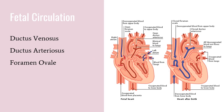Fetal circulation describes the blood flow from the placenta to and through the fetus and then back to the placenta. There are three shunts during fetal life. The ductus venosus connects the umbilical vein to the inferior vena cava, bypassing the liver. The ductus arteriosus connects the main pulmonary artery to the aorta, bypassing the lungs. The foramen ovale is an anatomic opening between the right and left atrium, bypassing the right ventricle.